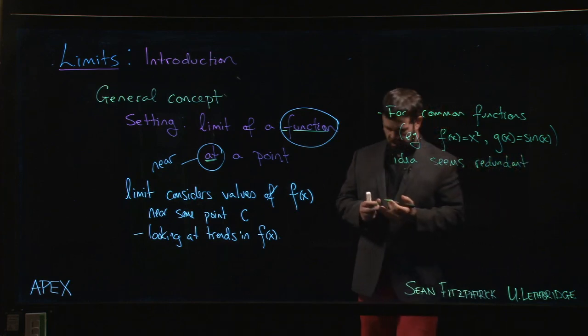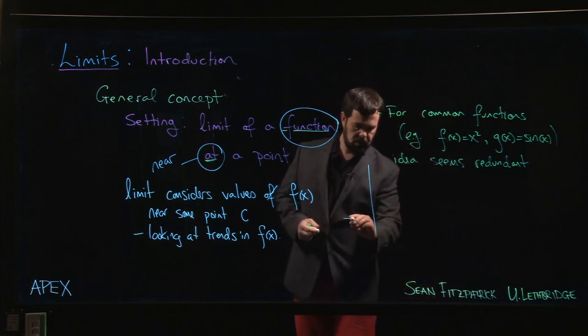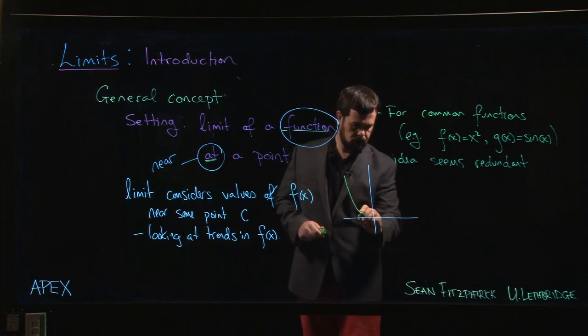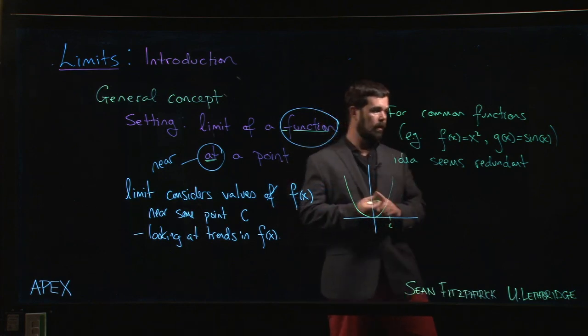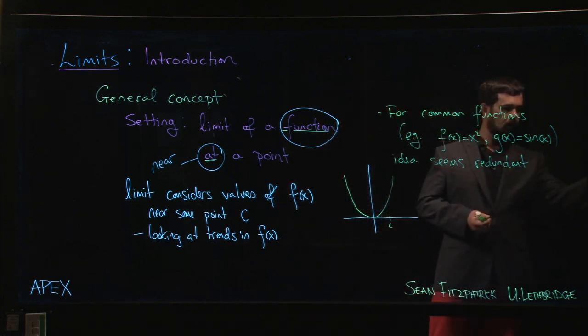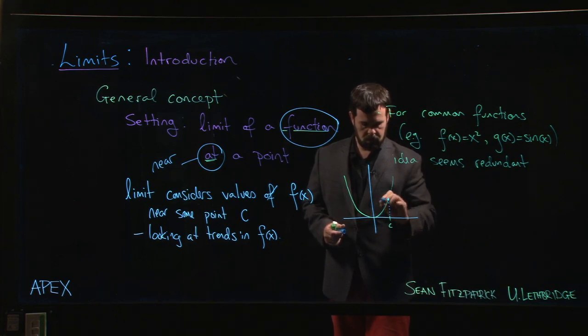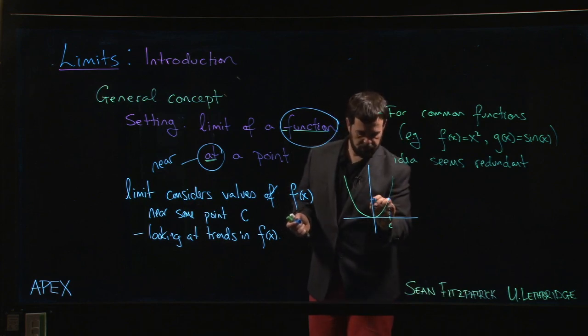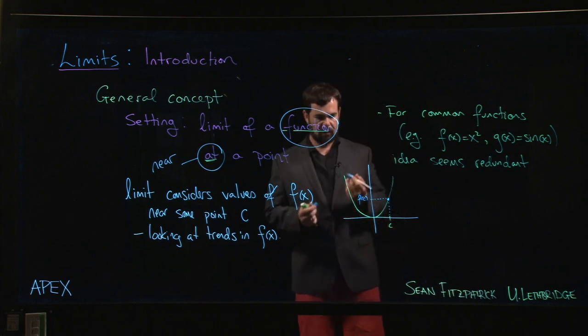Because what you do is, you know, maybe you're looking at the graph of something like x squared. So here's our graph and you're choosing some point c. And so we follow that point up to the graph and we have this point on the graph. Now we know what that corresponding y value is. In function notation, that y value is f of c.